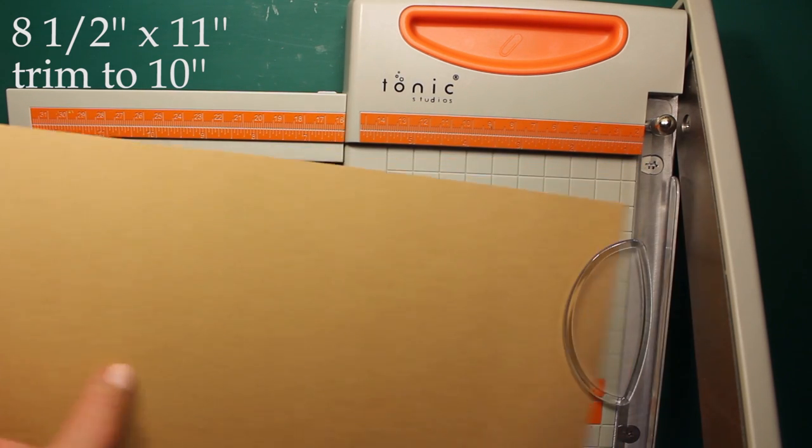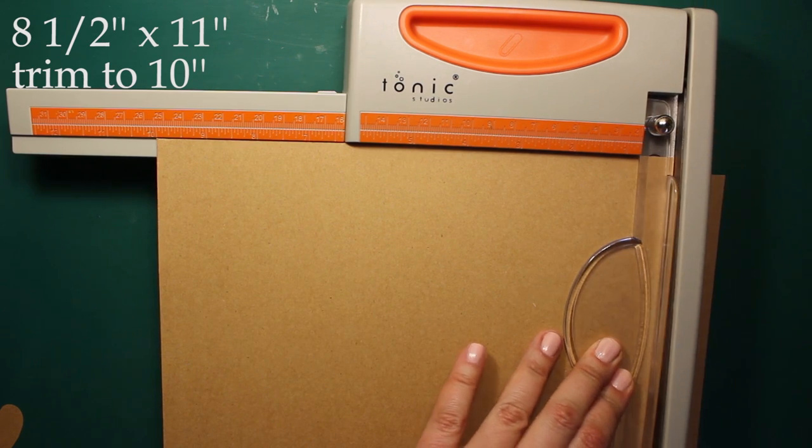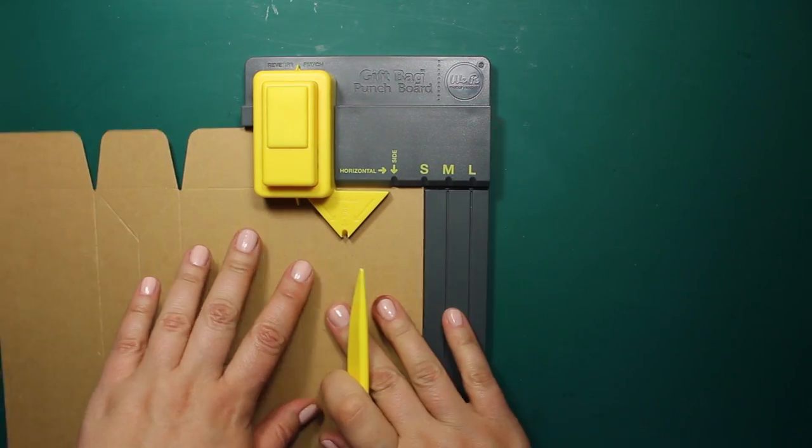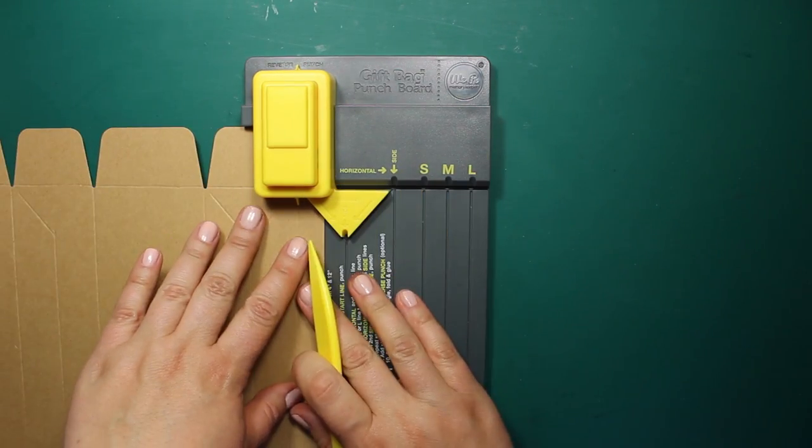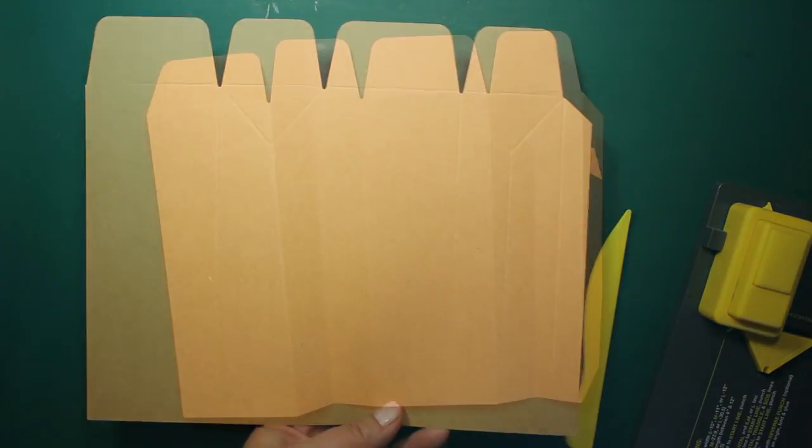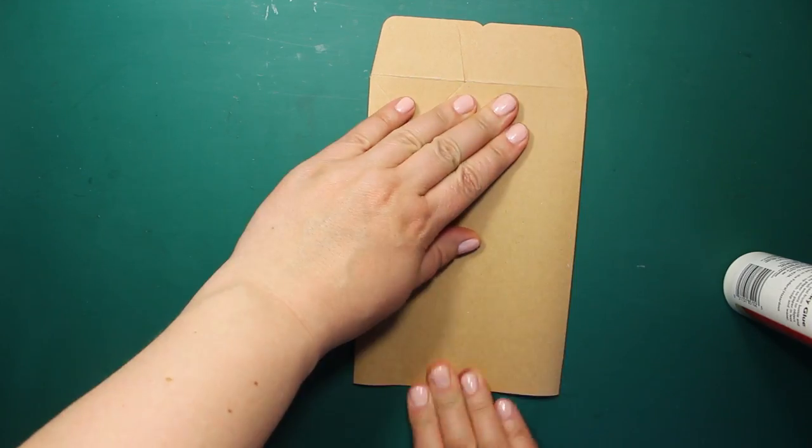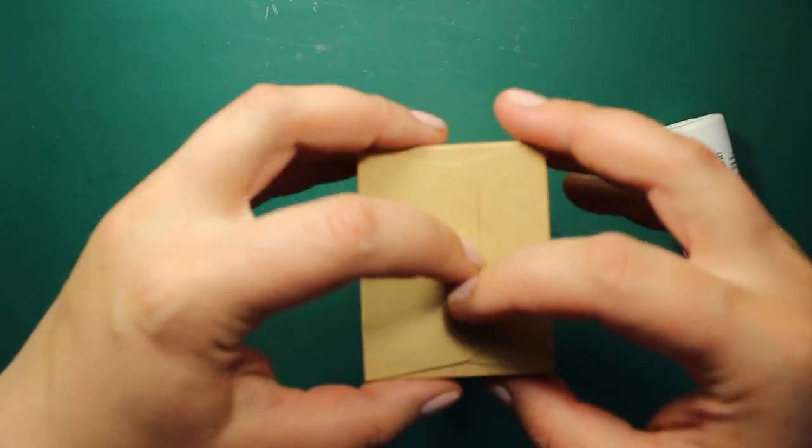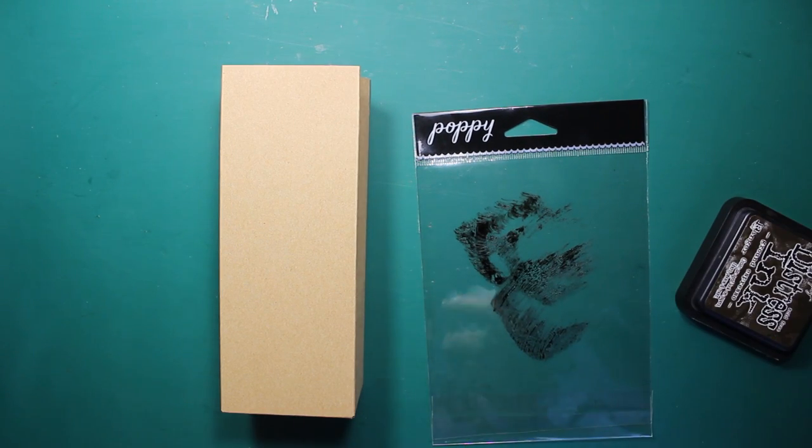To make a matching treat bag I am trimming a sheet of craft cardstock. It should be 10 inches wide. Then I am using gift bag punch board by WR Memory Keepers to create a bag template. And then I will be assembling the bag. I am going to add the splatters to the bag just as I did to the card.